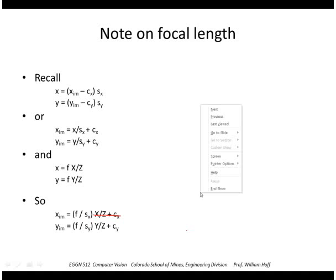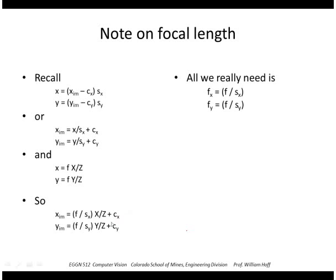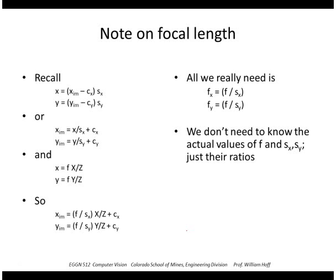So I can plug in the value for the image plane coordinates and I get f over sx times x over z plus cx, etc. So since this always occurs in a ratio, if I'm trying to project a 3D point onto a 2D image, all I really need to know is this ratio of f over sx and f over sy. So I don't really need to know the actual values of f and sx and sy individually, just their ratios.